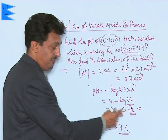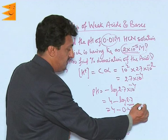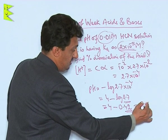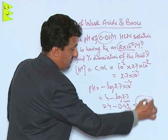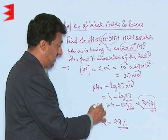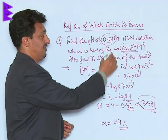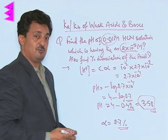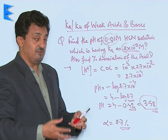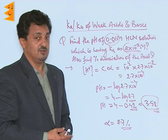You can find the correct value from the log table. So pH = 4 − 0.42 = 3.58. This is the pH of the given 0.01 molar HCN solution with dissociation constant 2 × 10⁻⁵. This is how we can use the data of weak acids and weak bases to find out their pH.